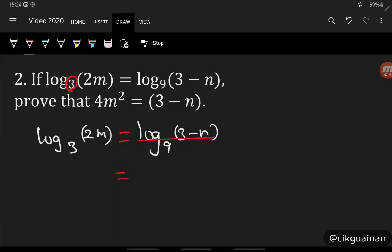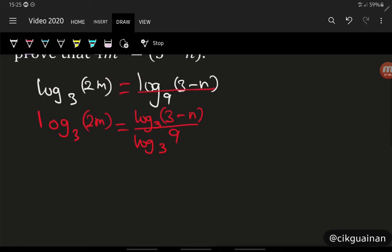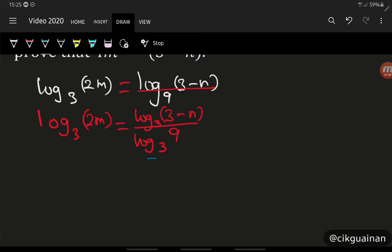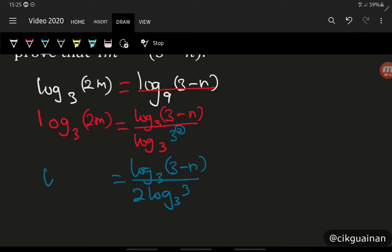Using change of base, we get log(3-n) base 3 divided by log(9) base 3. The left hand side is log(2m) base 3. Now, 9 is 3 squared, so log(9) base 3 equals log(3²) base 3, and the power 2 can come in front, giving 2 × log(3) base 3, which equals 2. So the denominator simplifies to 2.